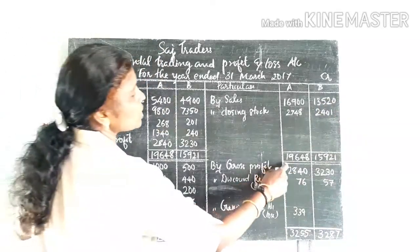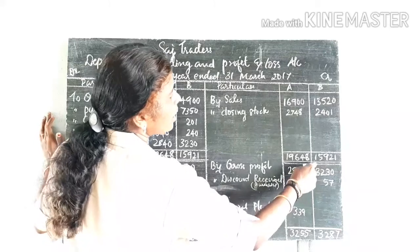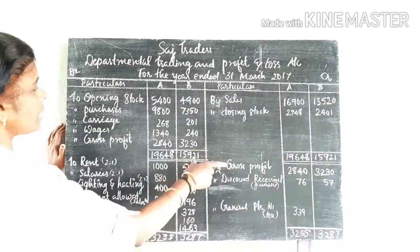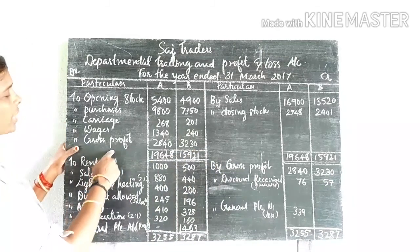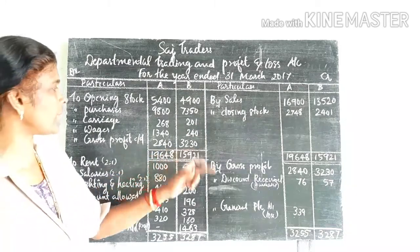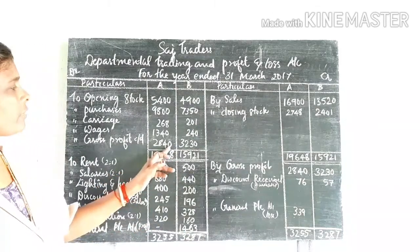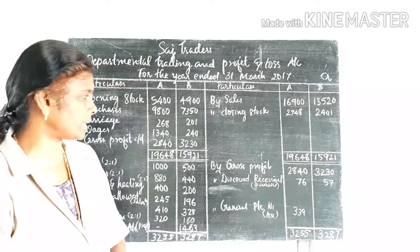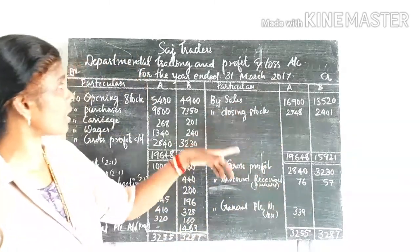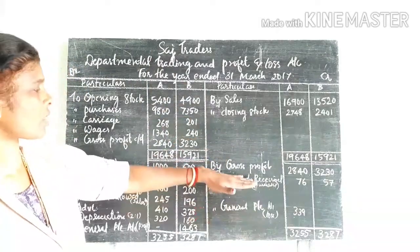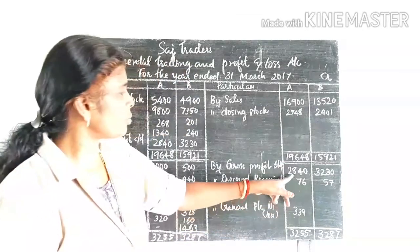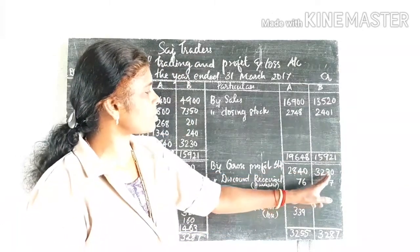Then totals: Department A: 19,648 rupees, Department B: 15,921 rupees. Gross profit carried down: Department A: 2,840 rupees, Department B: 3,230 rupees. Gross profit brought down to the departmental profit and loss account: Department A: 2,840 rupees, Department B: 3,230 rupees.